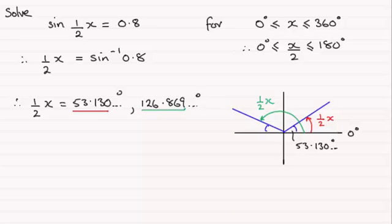So all we need to do now to get x is to multiply both sides by 2. And if you do that you end up with x equaling, doubling this gives us 106.260 and so on degrees. Doubling this one gives us 253.739 and so on degrees. And it brings these angles into this range here, 0 to 360 degrees.